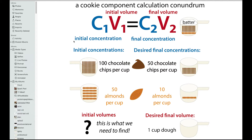Say you want to make chocolate almond cookies and you want the final concentrations to be 50 chocolate chips per cup and 10 almonds per cup, and you want to make one cup of dough. For our initial concentrations, we'll say there are 100 chocolate chips per cup — totally made-up numbers — and 50 almonds per cup.